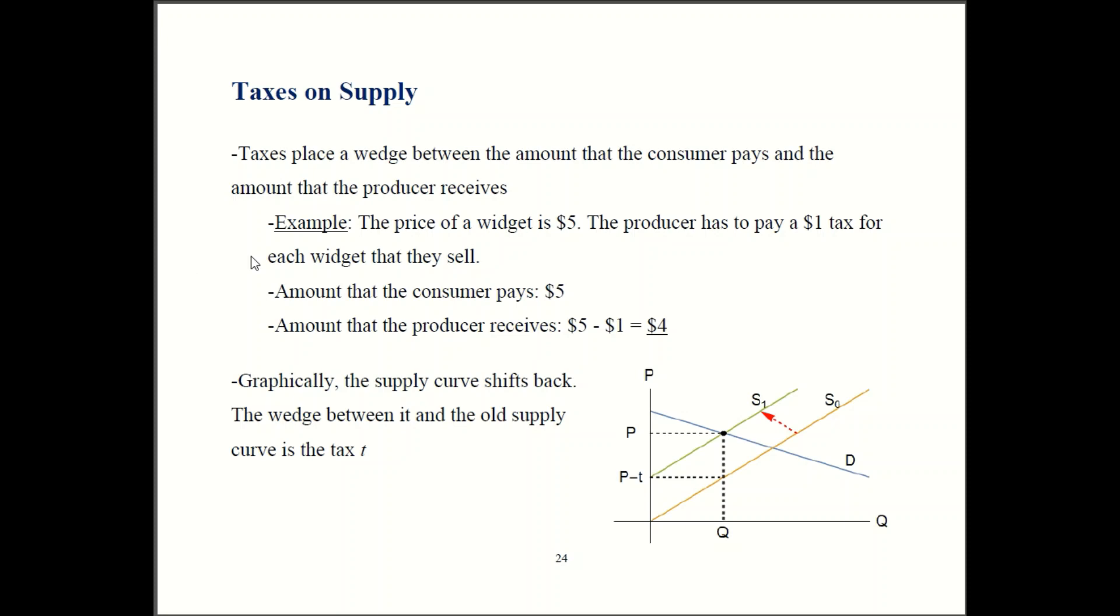So consumer pays five dollars, the price of the widget. The firm gets that five dollars but then they pay a one dollar tax to the government. Overall then, the firm only receives four dollars out of the five that the consumer paid. So there's a gap between what the consumer pays and what the firm receives.